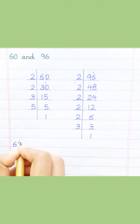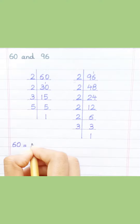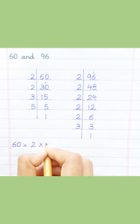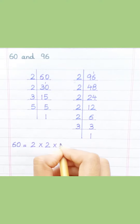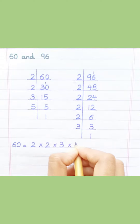60 equals 2 multiply 2 multiply 3 multiply 5.